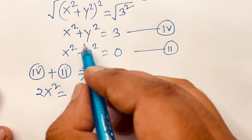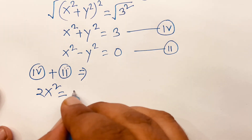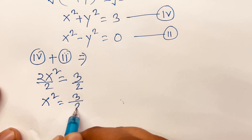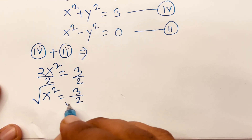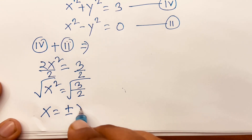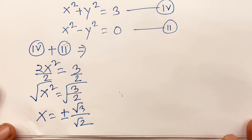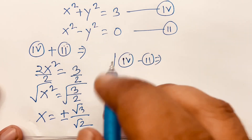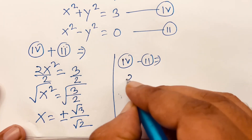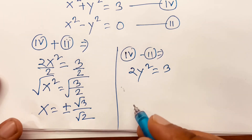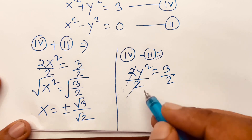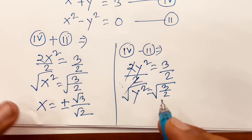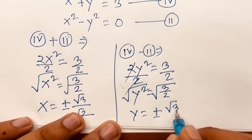Now if I add both equations — equation 4 plus equation 2 — it equals x squared plus x squared, which is 2x squared. This equals 3 plus 0 equals 3. Then dividing both sides by 2, x squared equals 3 over 2. Taking the square root of both sides, x equals plus or minus square root 3 over square root 2. Now subtracting both equations: y squared equals 3 over 2, so y equals plus or minus square root 3 over square root 2.